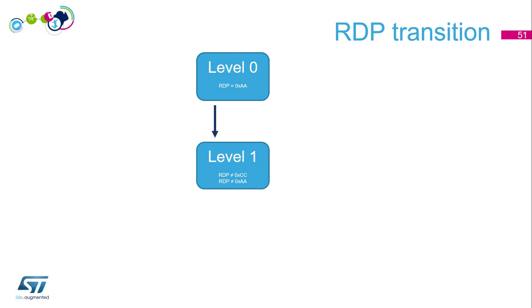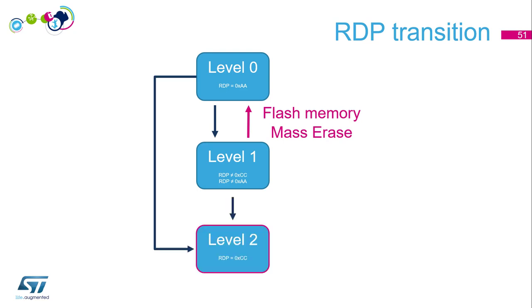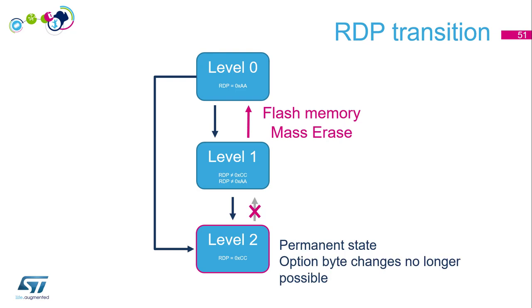Regarding RDP level transitions: you start at level 0 and can move to level 1. However, regressing from level 1 back to level 0 will trigger a flash memory mass erase — this is automatic and cannot be removed. From level 0 or level 1, you can move to level 2, but this is a final and permanent state; regression to level 1 is not possible.